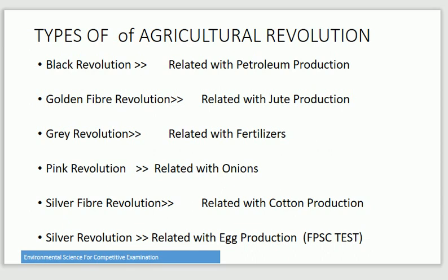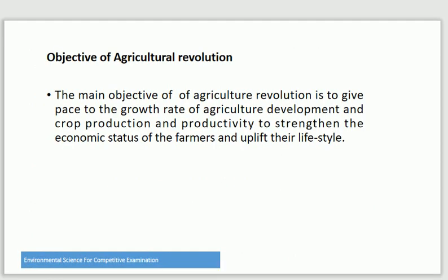Silver Revolution is related to egg production. The main objective of Agriculture Revolution is to give pace to the growth rate of agriculture development, crop production, and productivity, and to strengthen the economic status of farmers and uplift their lifestyle.